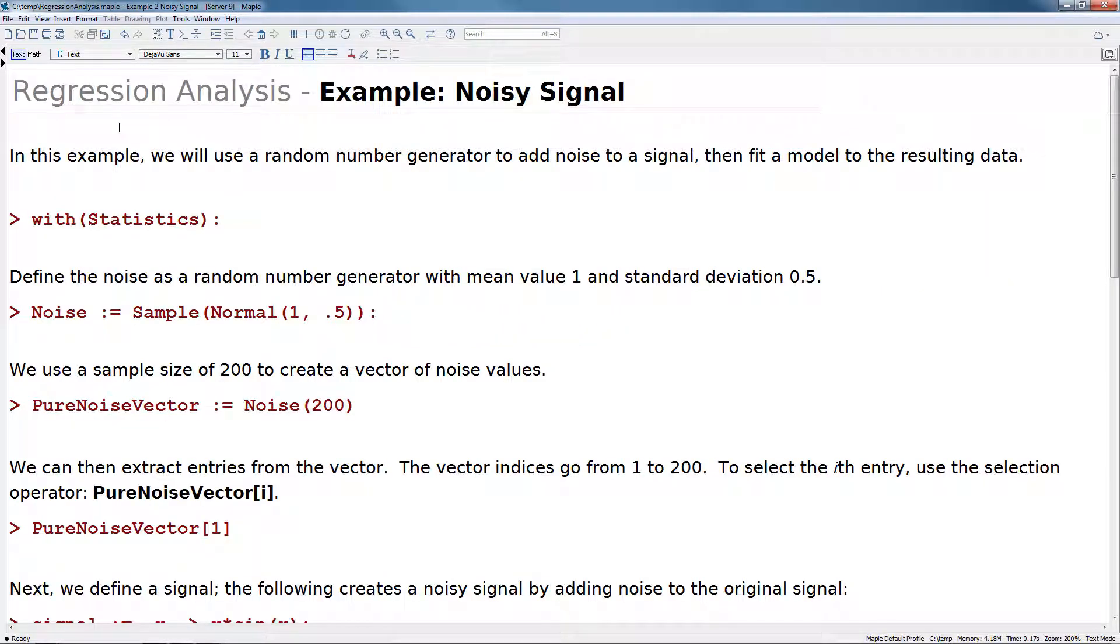Let's review another example. In this example, we will use a random number generator to add noise to a signal, then fit a model to the resulting data. As before, we start by loading the Statistics package. We define the noise as a random number generator with a mean value of 1 and standard deviation of 0.5.